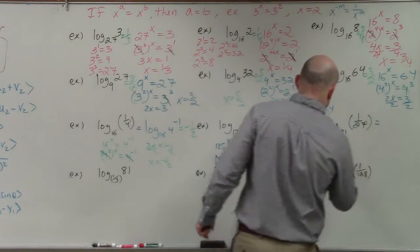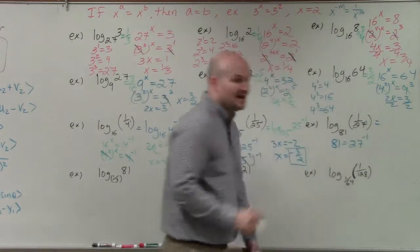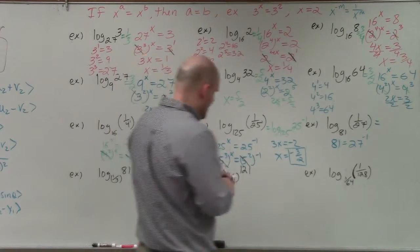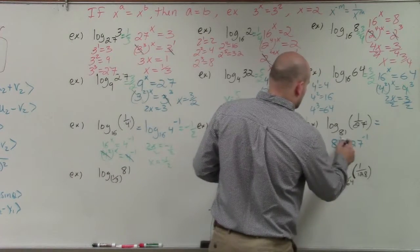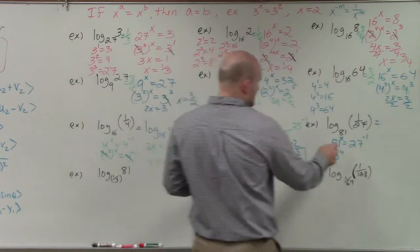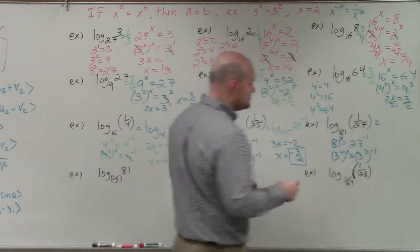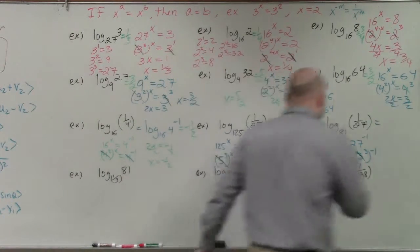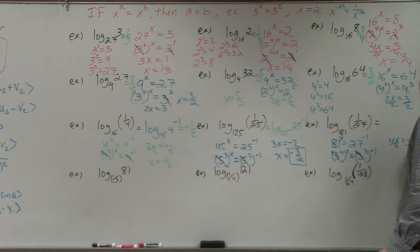For log base 81 of 1/27, I rewrite it as 81 to the x equals 27 to the negative first power. Since 81 is 3 to the fourth and 27 is 3 cubed, I write 3 to the fourth raised to the x equals 3 cubed to the negative first. Using the one-to-one property, 4x equals negative 3, divide by 4, and x equals negative three-fourths.